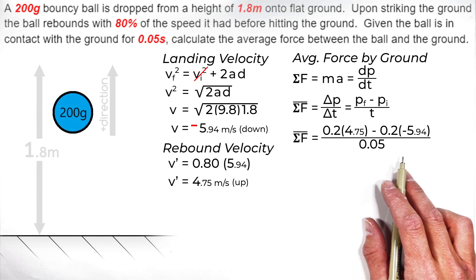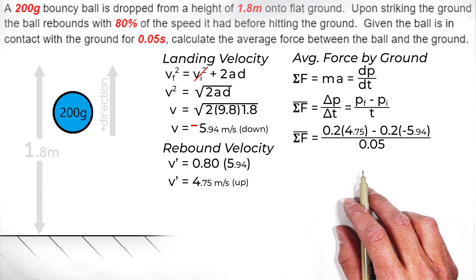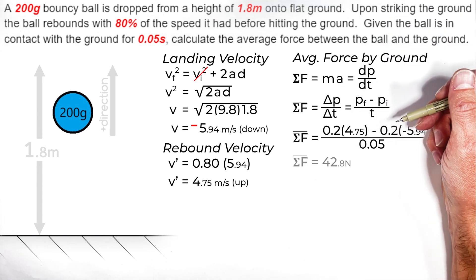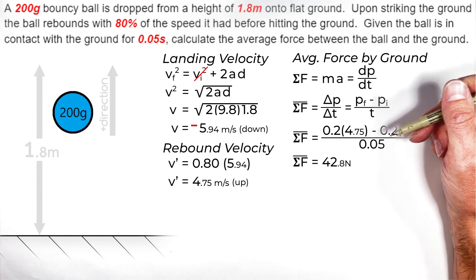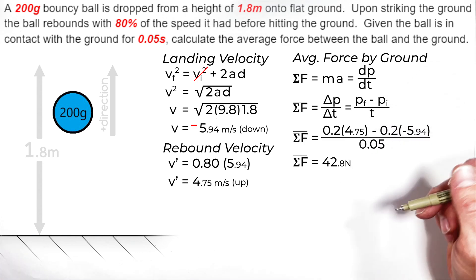Now we're going to divide that change in momentum by 0.05, leaving us with this. The average net force on the ball is 42.8 newtons.